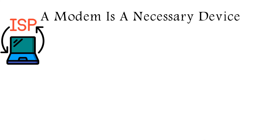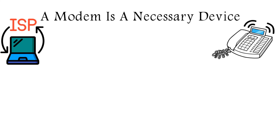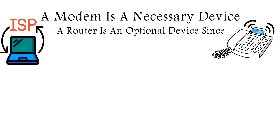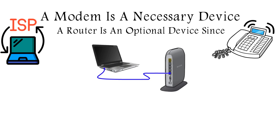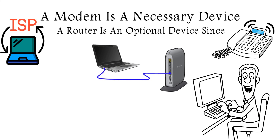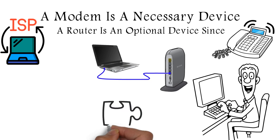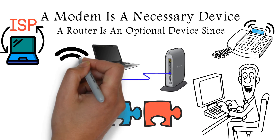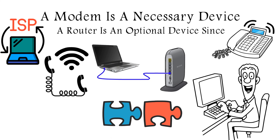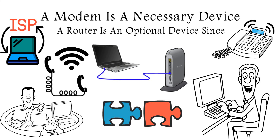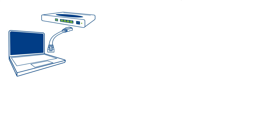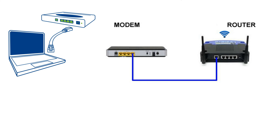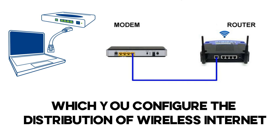In general, a modem is a necessary device if your ISP provides internet over a telephone line or over the air. A router is an optional device, since in extreme cases the internet cable can be plugged directly into the computer's network card — in which case no translator is needed. Sometimes these devices can be combined: for example, if internet is provided over a telephone line and you want a home network, insert the cable into the modem and connect the modem to the router, which distributes wireless internet.